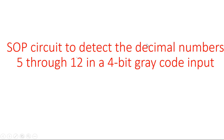Hi everyone. In this video I am going to explain the design of an SOP circuit — sum of products circuit — to detect the decimal numbers from 5 to 12. The decimal numbers we need to identify are from 5 to 12, but not in normal binary format; the input is in Gray code format.